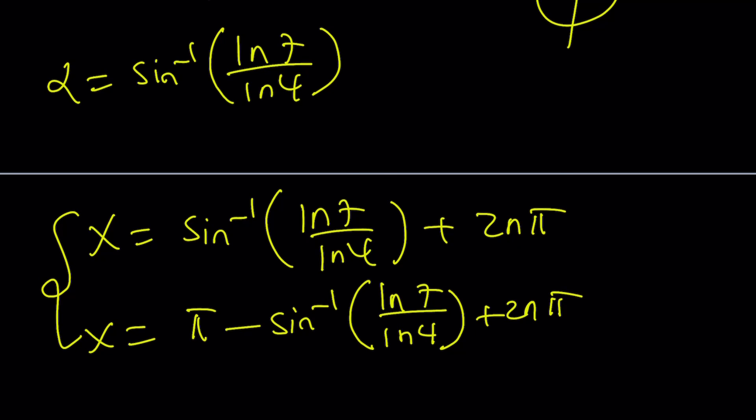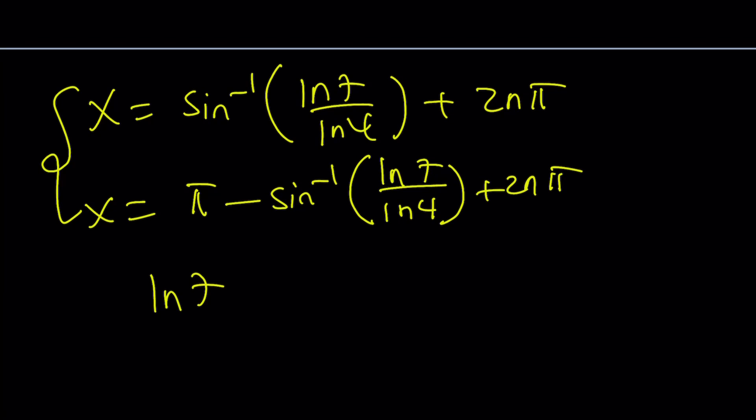Where is the problem? ln 7 over ln 4 is greater than 1. Why? Because 7 is greater than 4. Right? So this doesn't give you any real solutions. Because if the sine of an angle is greater than 1, then we're actually outside the real numbers.